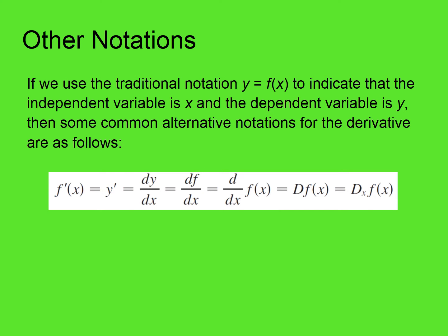If we use the traditional notation — y equals f of x — to indicate that the independent variable is x and the dependent variable is y, then some common alternative notations for the derivative are as follows. We are familiar with f prime of x. Occasionally you will see y prime. The Leibniz notation: dy over dx.